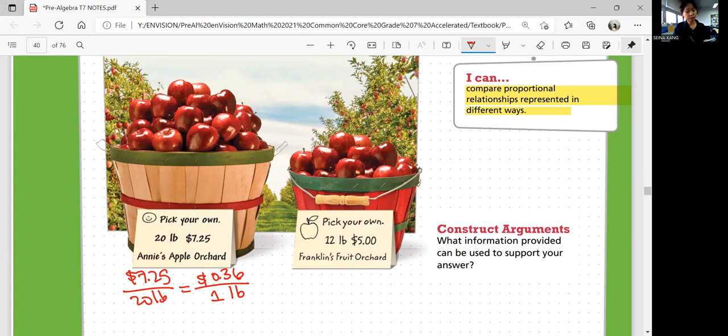Let me double check. 7.25 divided by 20 is 0.3625. So you can round it up to 0.36 per pound. What about Franklin's?